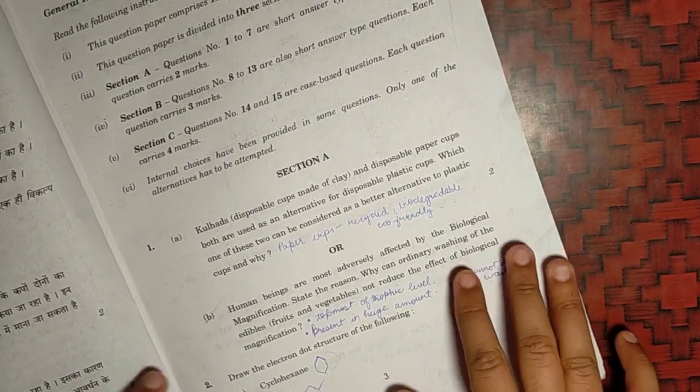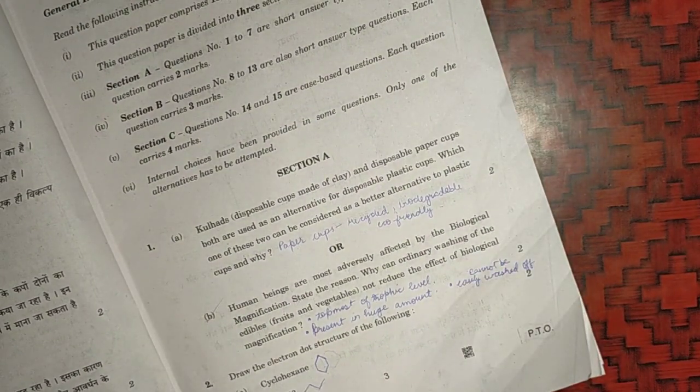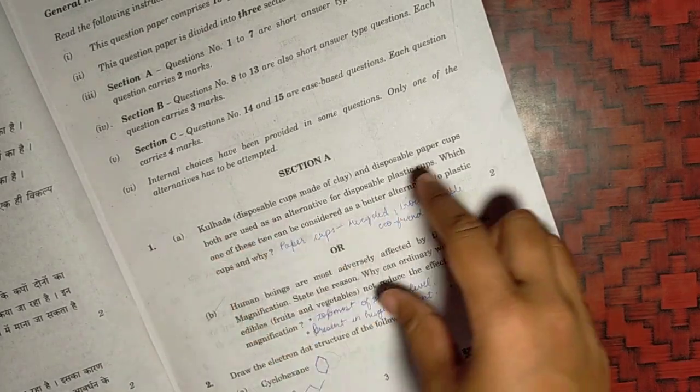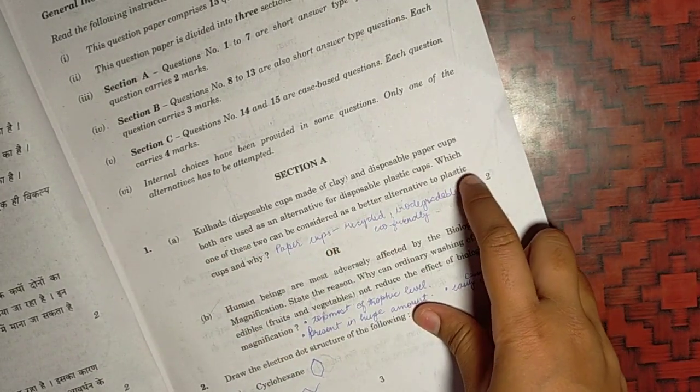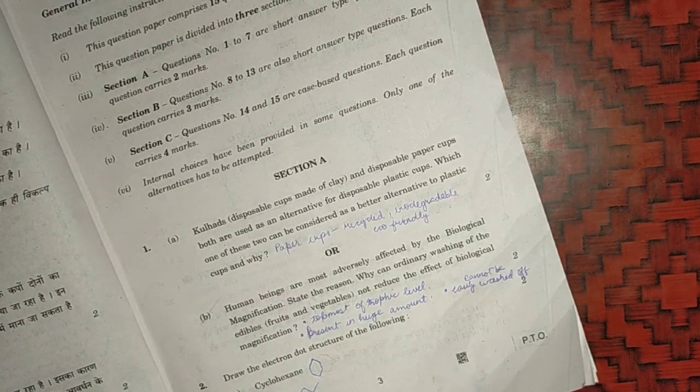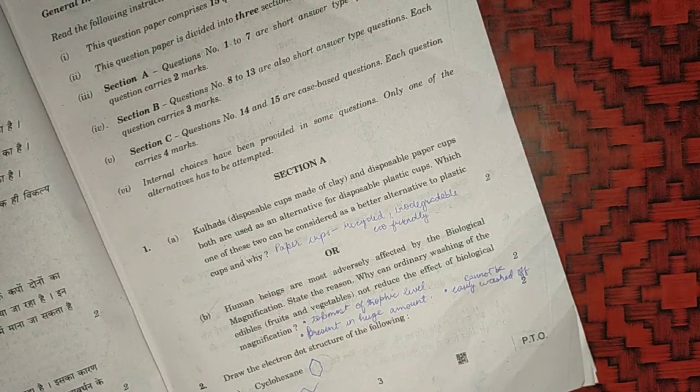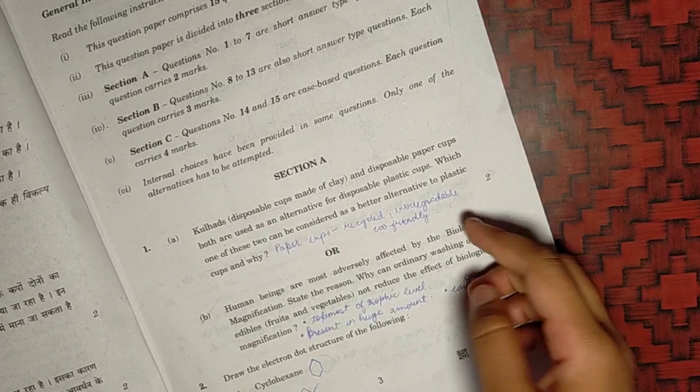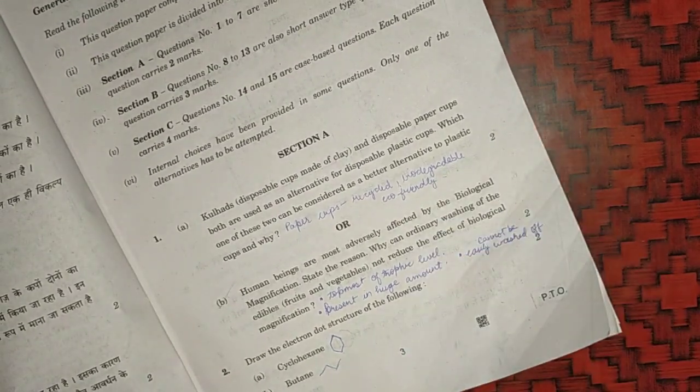So let's start from the first question which is part A. Which one is a better option? Is it plastic cups or the paper cups? So it will be paper cups because paper cups can be recycled, they are biodegradable and they are eco-friendly. You can write any two of these reasons in the question.